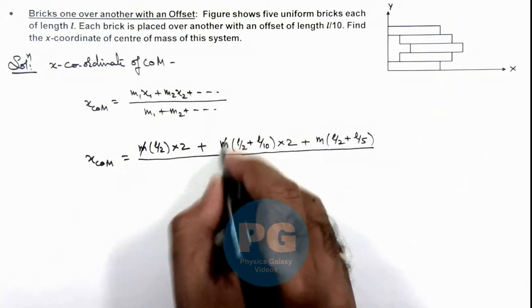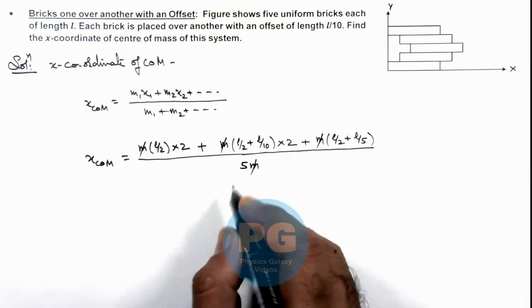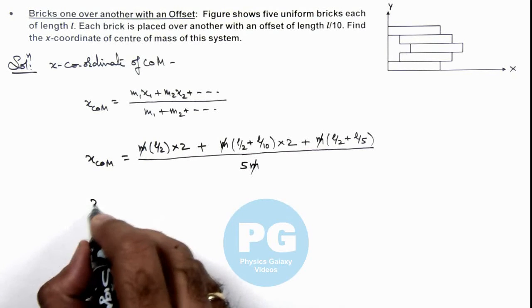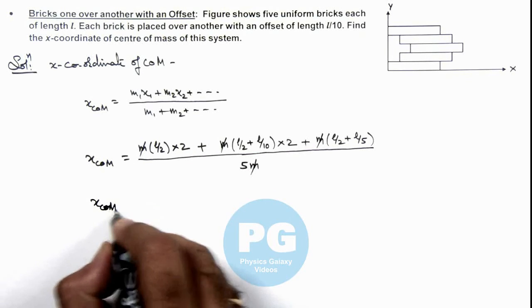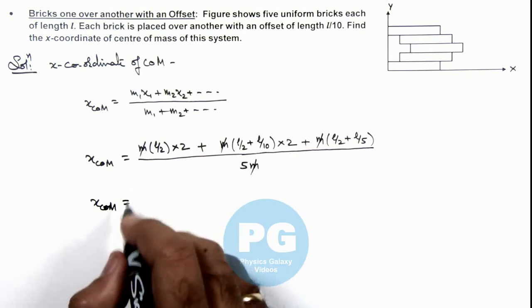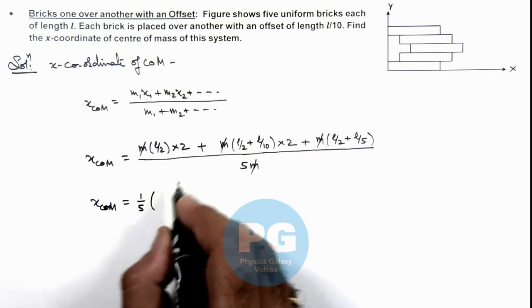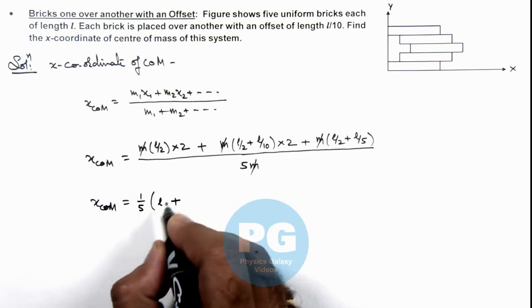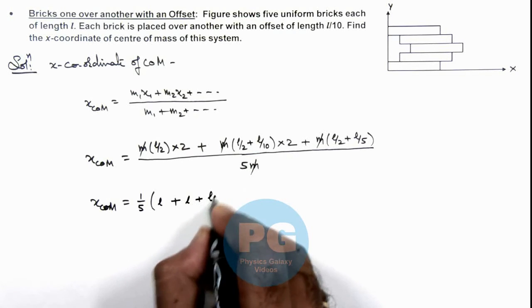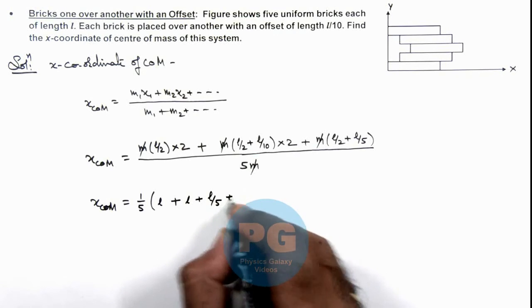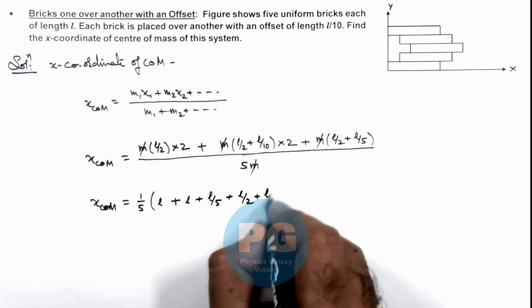So here you can see m gets cancelled out. And on further simplifying we are getting x-coordinate of center of mass is equal to: this 1 by 5 we can take common, and this will be l plus this will be l plus l by 5, plus l by 2 plus l by 5.